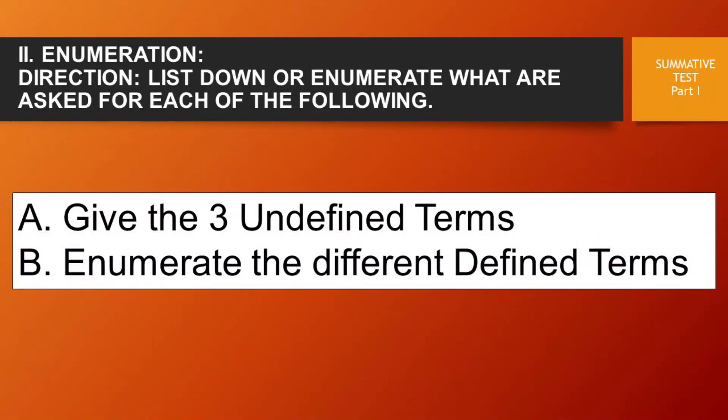And for test 2, enumeration. Direction: list down or enumerate what are asked for each of the following. For letter A, give the three undefined terms. And for letter B, enumerate the different defined terms.